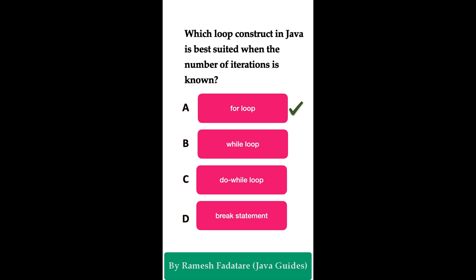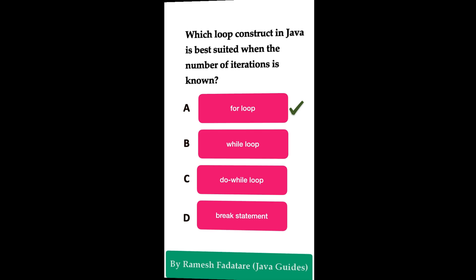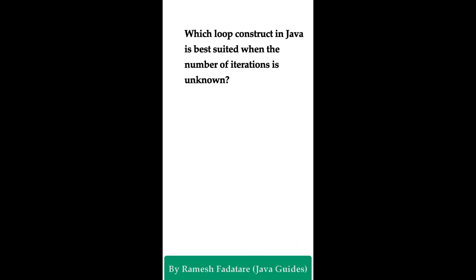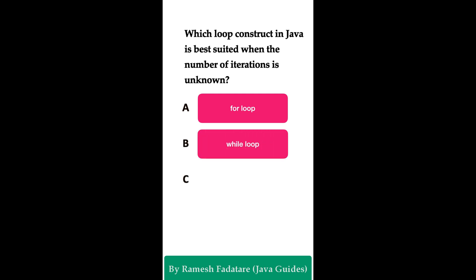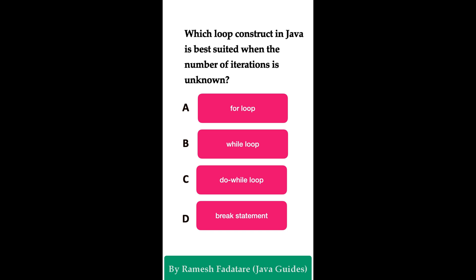The for loop is best suited when the number of iterations is known. It allows you to specify the initialization, condition, and increment in a single line, making it ideal for iterating a known number of times. Which loop construct is best suited when the number of iterations is unknown? Option A: for loop, Option B: while loop, Option C: do-while loop, Option D: break statement. You have five seconds to answer.